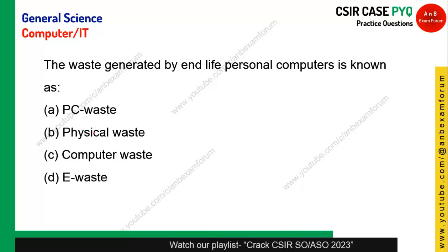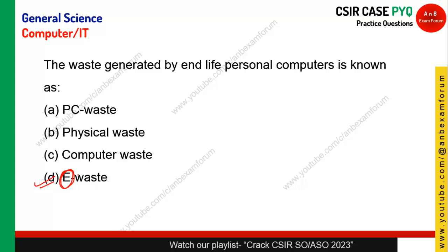The waste generated by the end-of-life of a personal computer is known as what? Nowadays everybody is talking about e-waste. E-waste stands for electronic waste — the waste generated by end-of-life personal computers. Option D is the right answer.